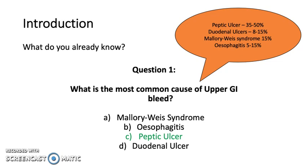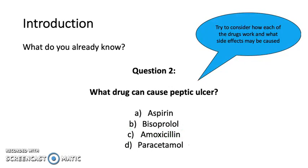Peptic ulcer makes up 35 to 50% of the causes of upper GI bleed. Duodenal ulcer is 8 to 15%, Mallory-Weiss syndrome 15%, and esophagitis is 5 to 15%.